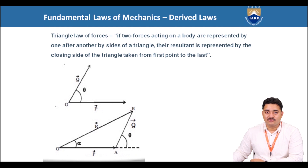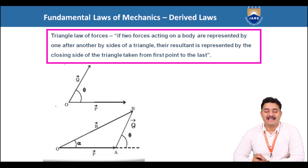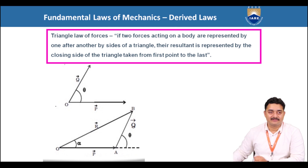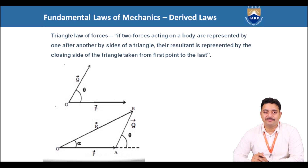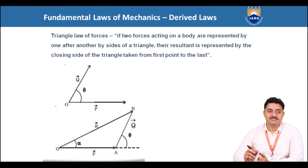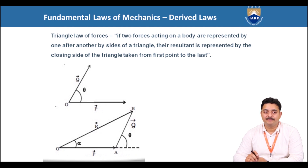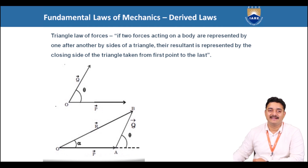There are other ways to find the resultant force using derived laws: the triangle law of forces and the polygonal law of forces. The triangle law of forces states that if two forces acting on a body are represented one after another by the sides of a triangle, the resultant is represented by the closing side of the triangle taken from the first point to the last. Consider two forces P and Q acting at point O at an angle theta. Represent P in magnitude and direction, then represent Q starting from the end point of P. The closing side of the triangle from O to B will be the resultant acting at angle alpha.